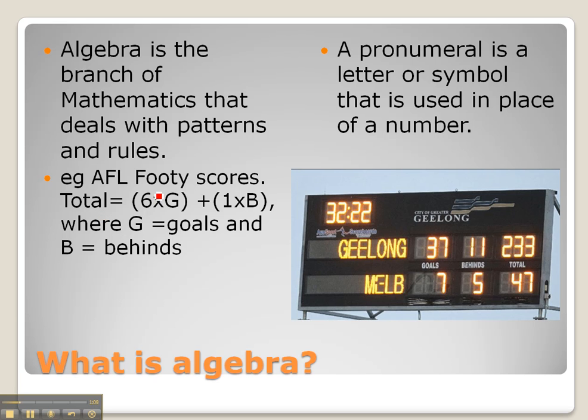By using this equation we're able to work out the score of any football match simply by putting in the number of goals kicked by the team and the number of behinds kicked by the team, solving the equation to get the total score.